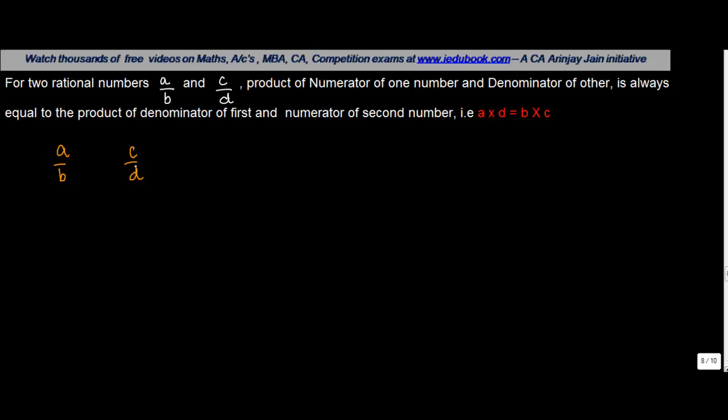What this property says is that for any two rational numbers, if you do a cross multiplication in the sense that you multiply a with d and you multiply b with c, in that case, a into d is always equal to b into c.